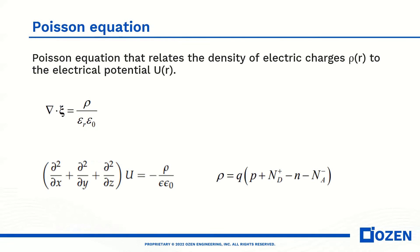The third equation is Poisson equation. Poisson equation relates the density of electric charge to the electrical potential. As you see in this slide, ND and NA are the donor and acceptor impurity that we inject in our semiconductor.